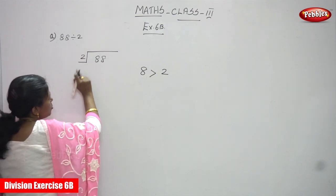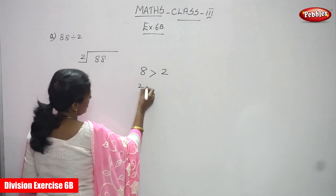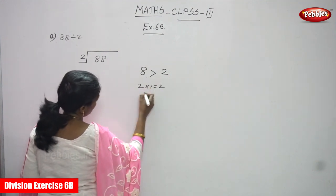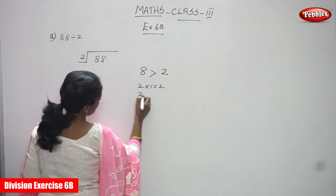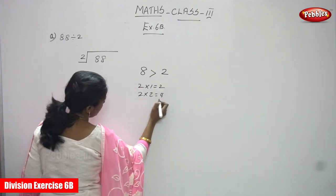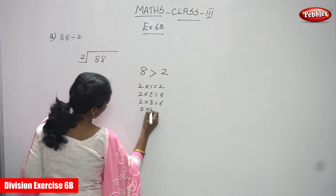So you must use the two table. Two ones are two, two twos are four, two threes are six, two fours are eight. Okay, four here, eight.